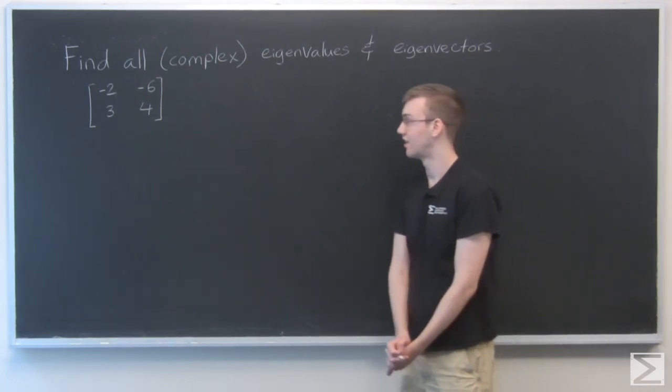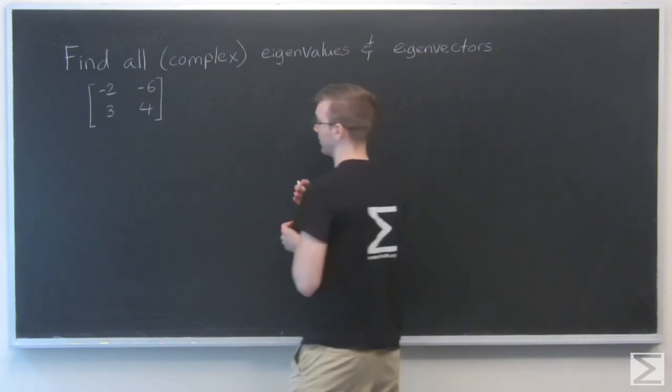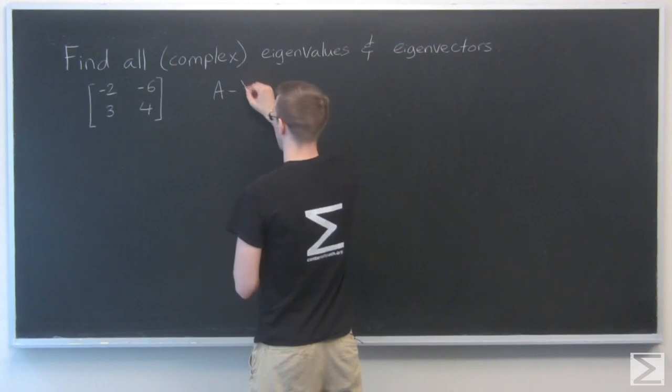So let's get to it. We're just going to go about the typical way that we find eigenvectors and eigenvalues, which is when we look at the matrix A minus lambda I.